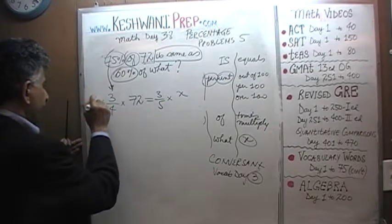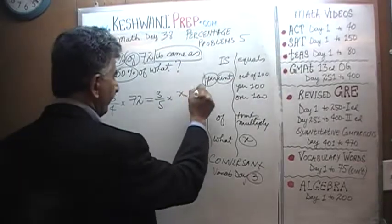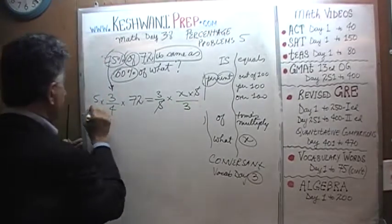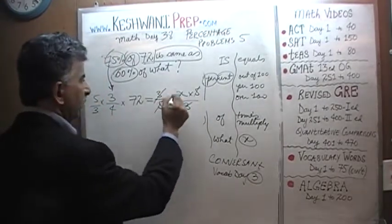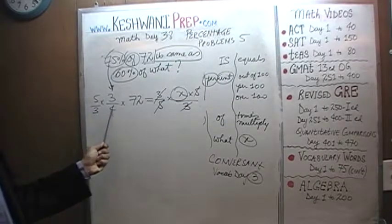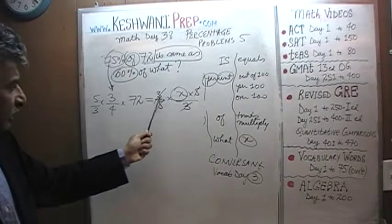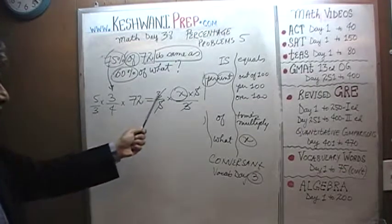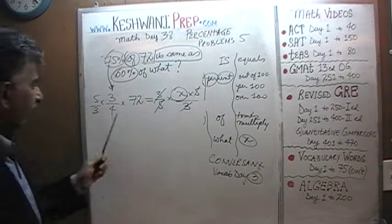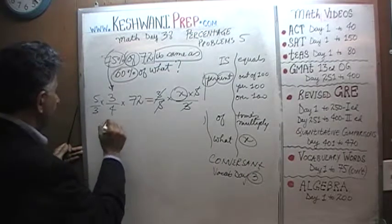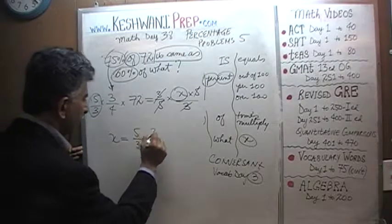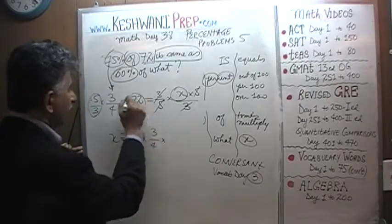Multiply both sides by 5 to eliminate the 5 in the denominator, then divide both sides by 3 to get rid of that 3. In other words, multiply by the reciprocal of 3 fifths, which is 5 thirds. So X equals (5/3) × (3/4) × 72.